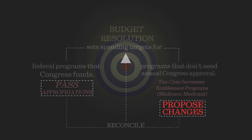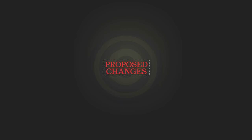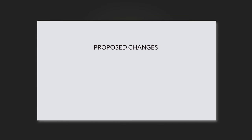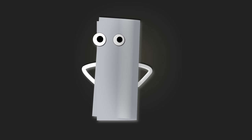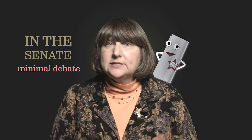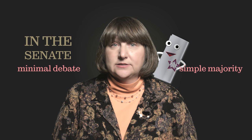This is what Republicans will use to order changes to the Affordable Care Act. When the committees report back their proposed changes, they're assembled into a budget reconciliation bill. In the Senate, budget reconciliation has its own special rules that make it easier to pass.